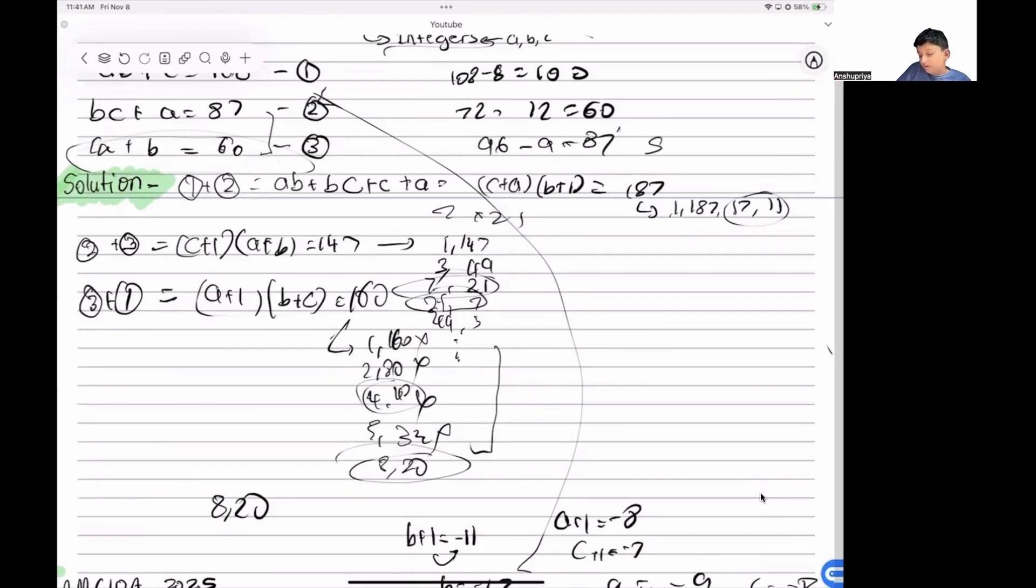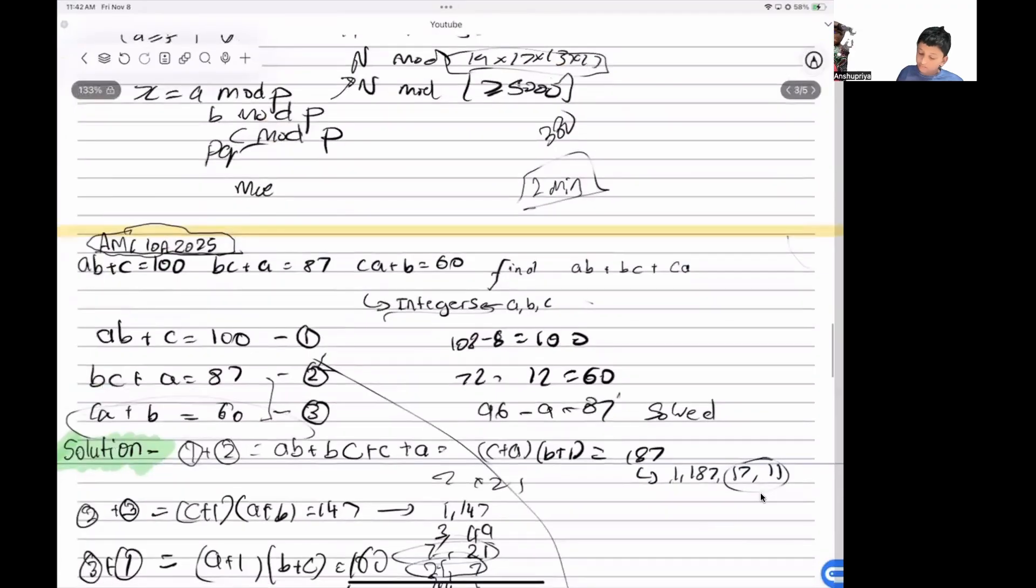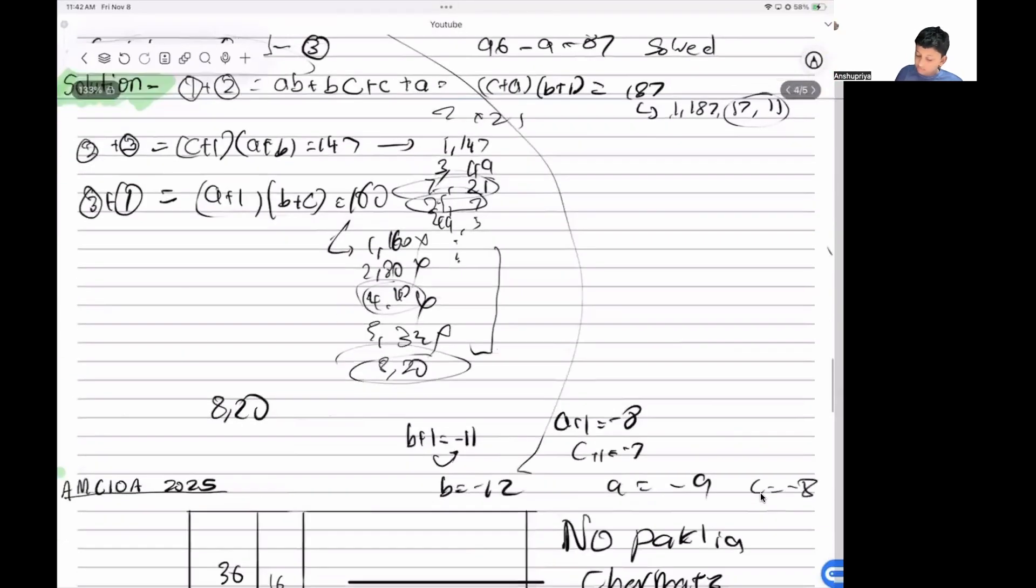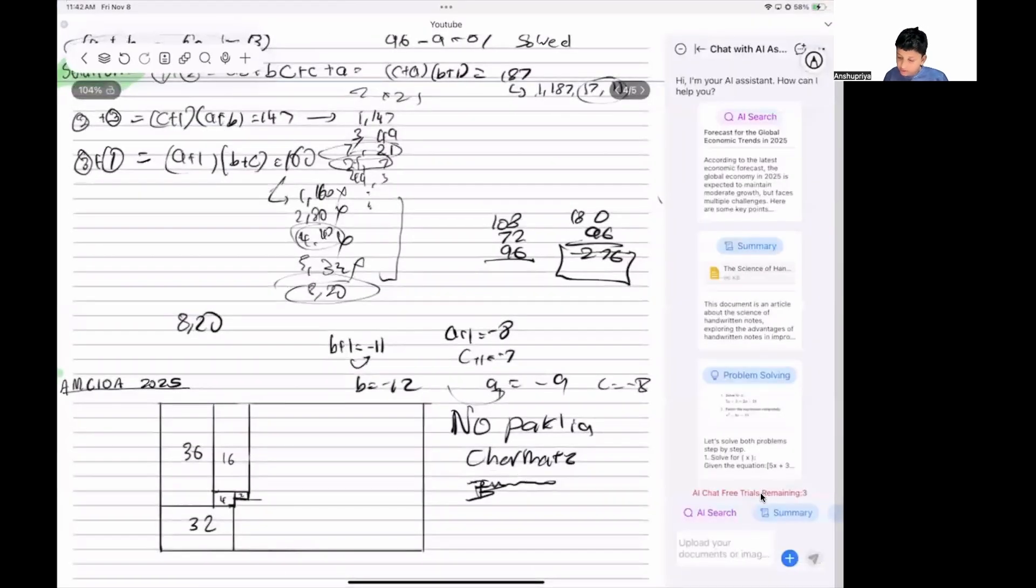So the answer will be ab + bc + ca, which equals 108 + 96 + 72 = 276. Please check it.